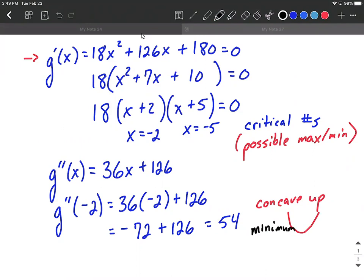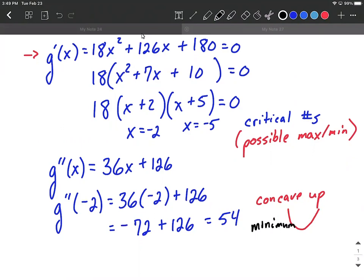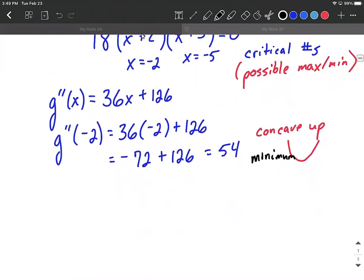So at an x value of negative 2, we're going to get a minimum. Let's do the same test, the second derivative test, using the negative 5. So we're going to plug negative 5 in. So we have 36 times negative 5 plus 126.